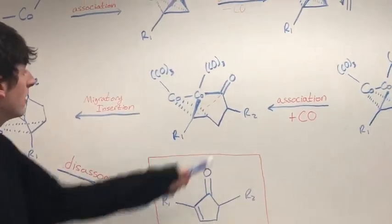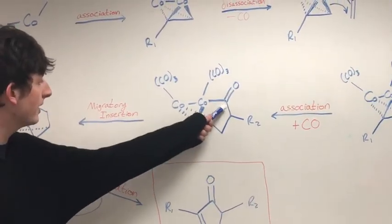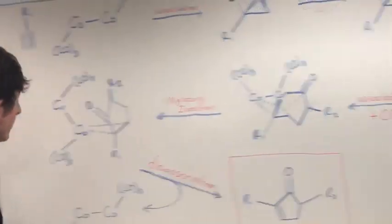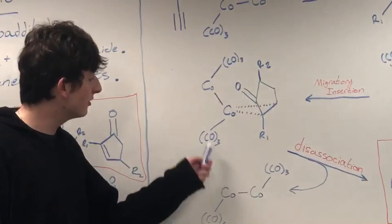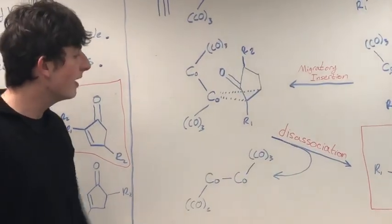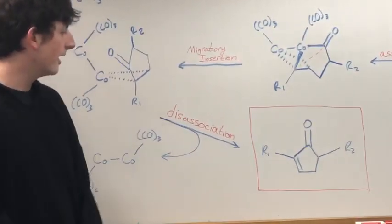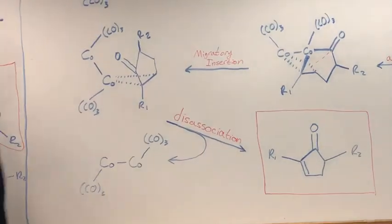And then, in a migratory insertion, we'll have this bond formation from the base of the carbonyl to here, giving us our five-membered ring. And then, in one final dissociation, our catalyst will reform, and we will also get our cyclopentenone products.